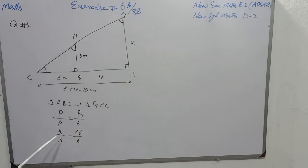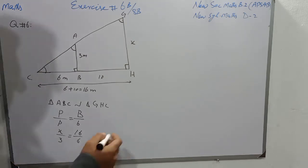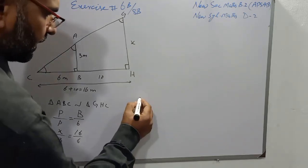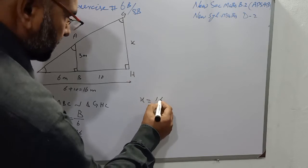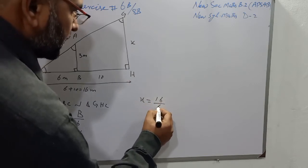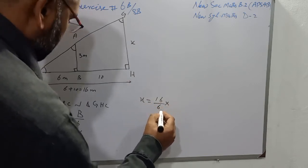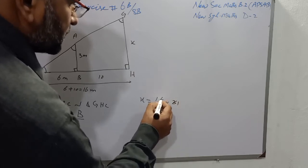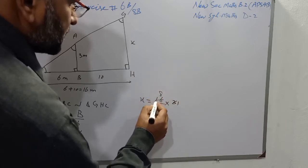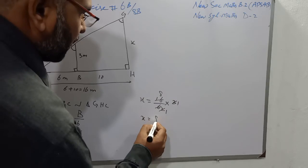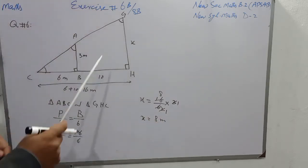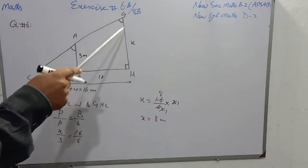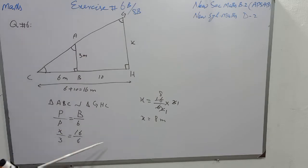We have to find the value of X. This 3 is dividing on the left side; when we transfer it to the other side, it will multiply. The value of X will be 16 over 6, multiplied by 3. Simplifying: 3 over 6 reduces to 1 over 2, and 16 over 2 gives 8. So the value of X is 8 meters — the height of the lamp is 8 meters.